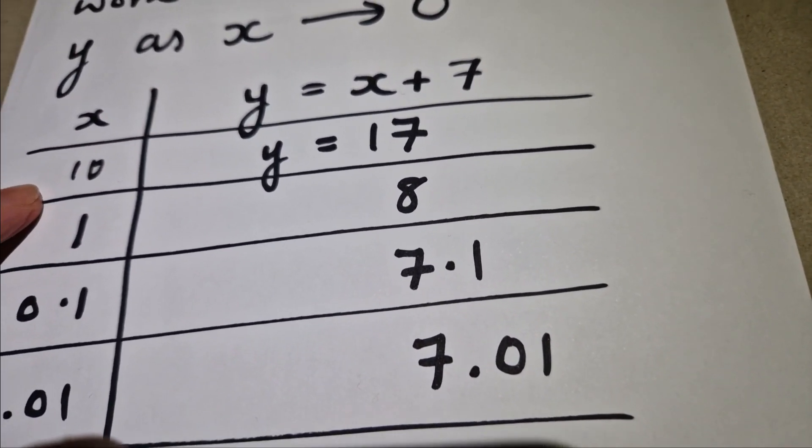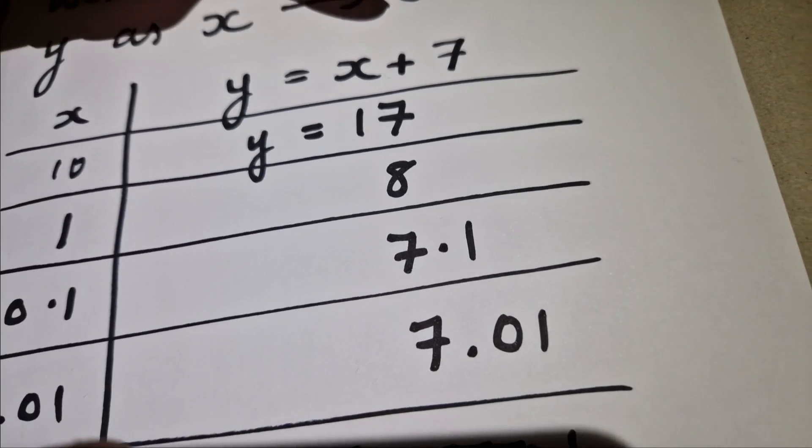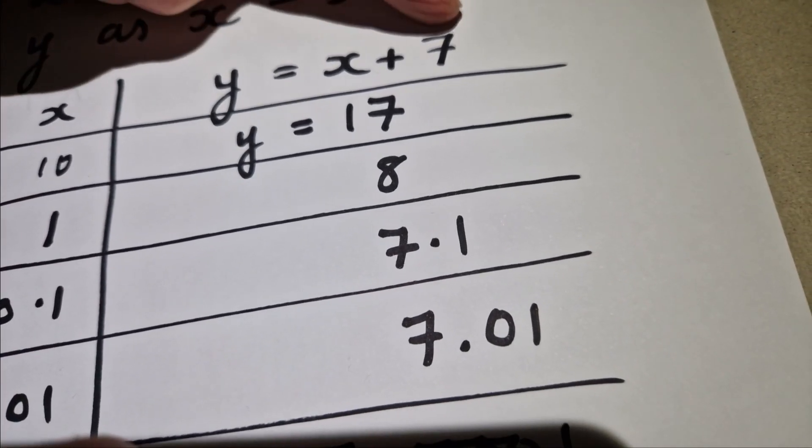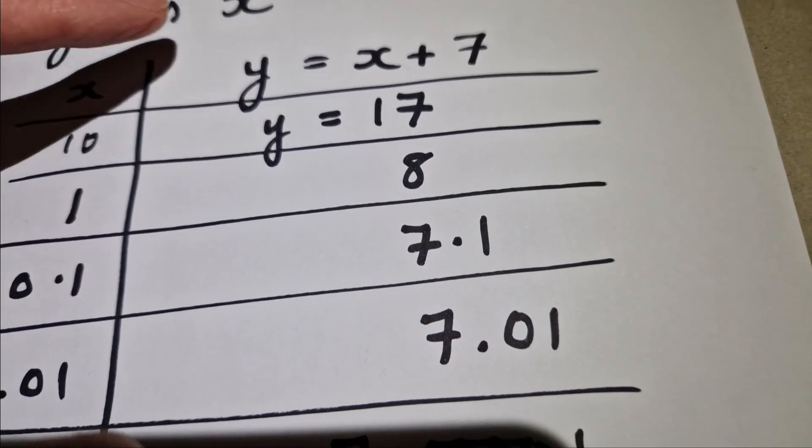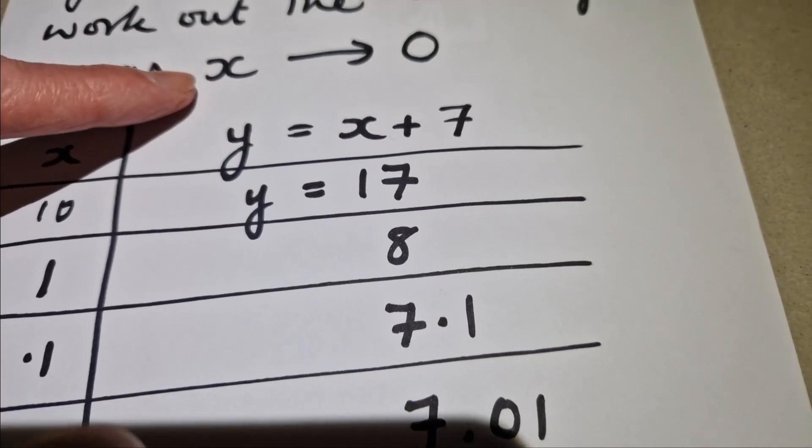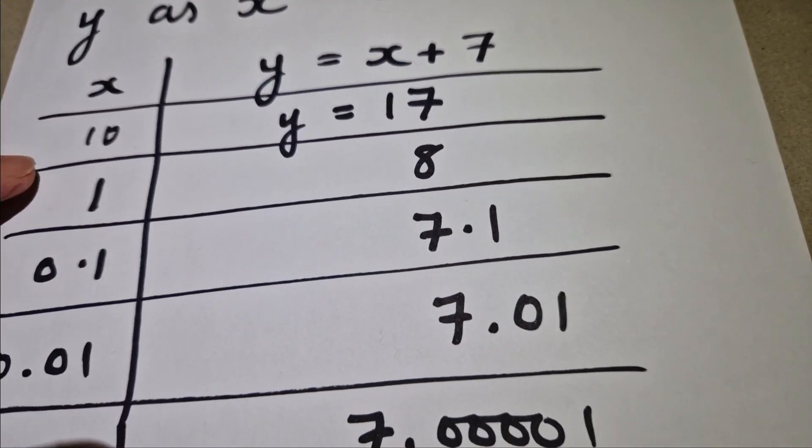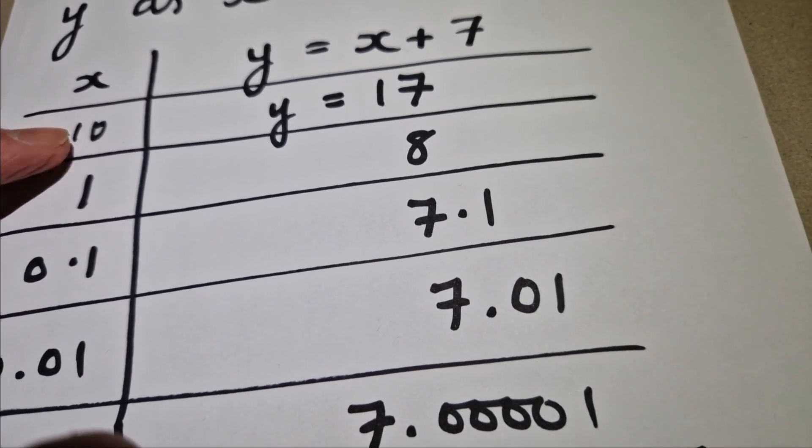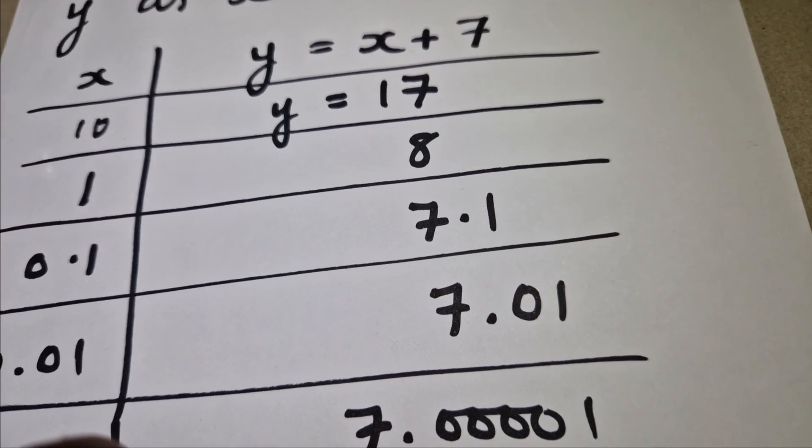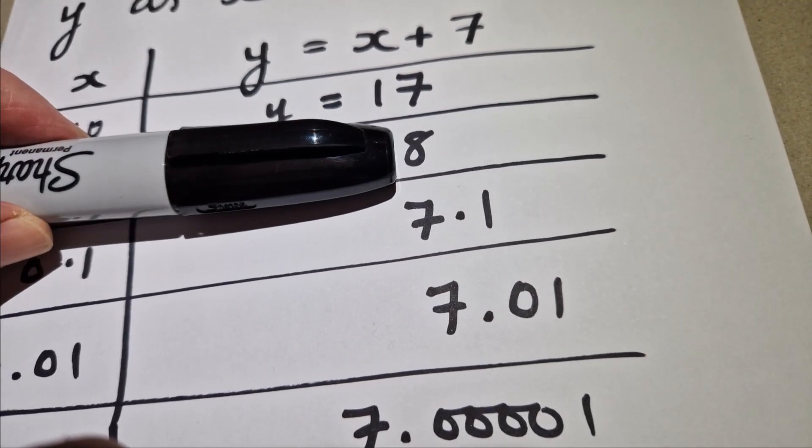If x is equal to 10, then we simply work out y by saying 10 plus 7 is 17. Now remember we want x to go towards zero, so we need to make our x values lower. So let's go from 10 to 1. Well, 1 plus 7 is just going to give us the value of 8.